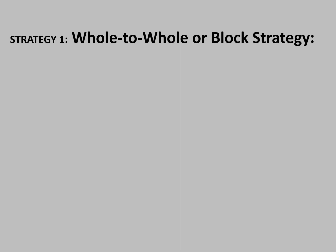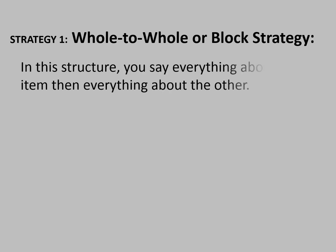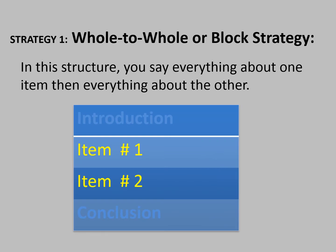Strategy number one: the whole-to-whole or block strategy. In this strategy, you say everything about one item, then you move on to say everything about the other item. As you can see here, we have item one and item two. Taking the example of Chmisat and Casablanca: you write the introduction, then you say everything about Chmisat in one paragraph, then you move to the second paragraph and say everything about Casablanca before you write your conclusion.